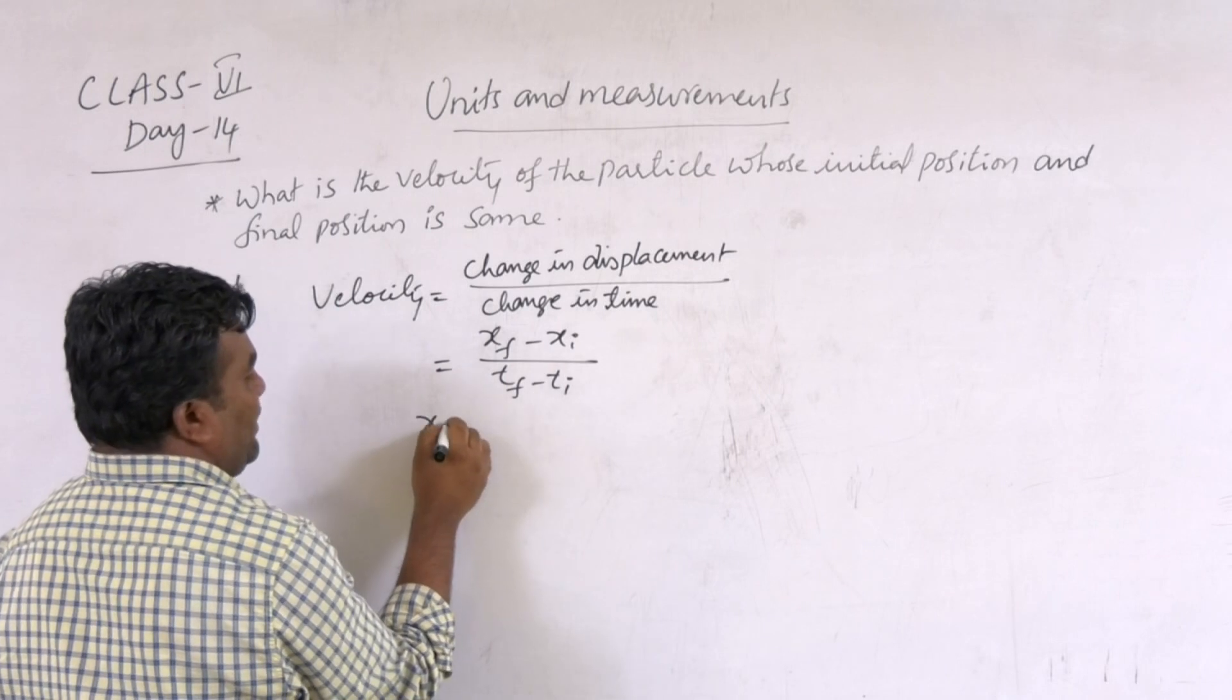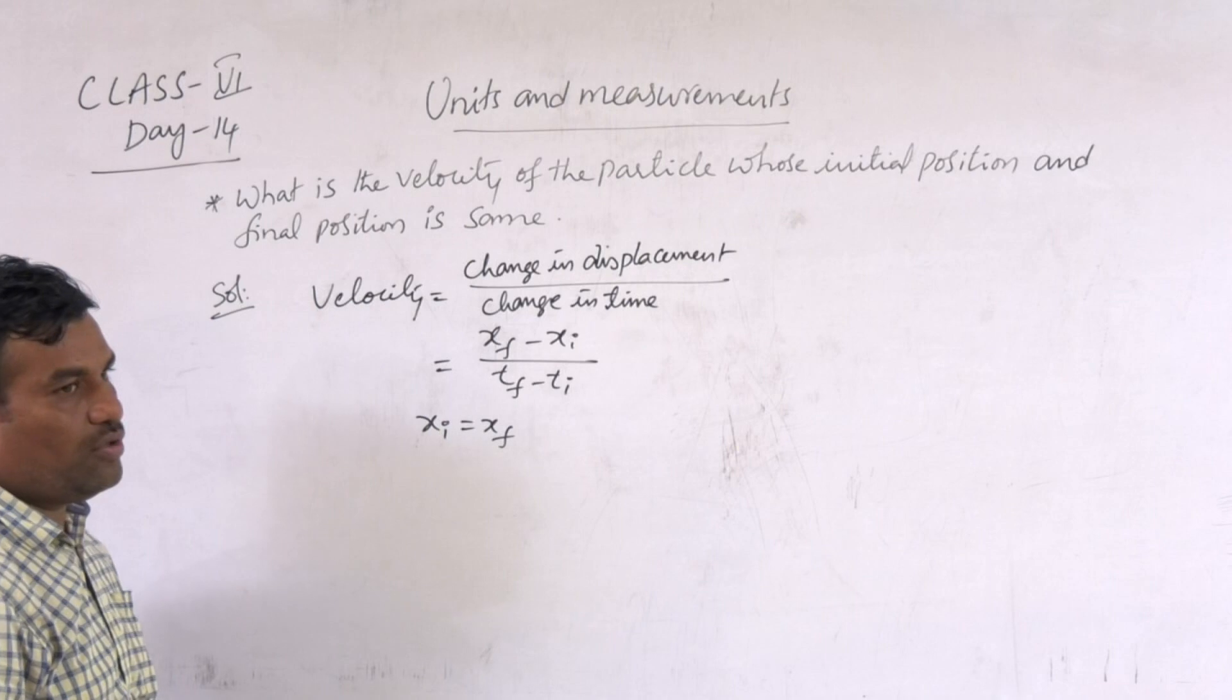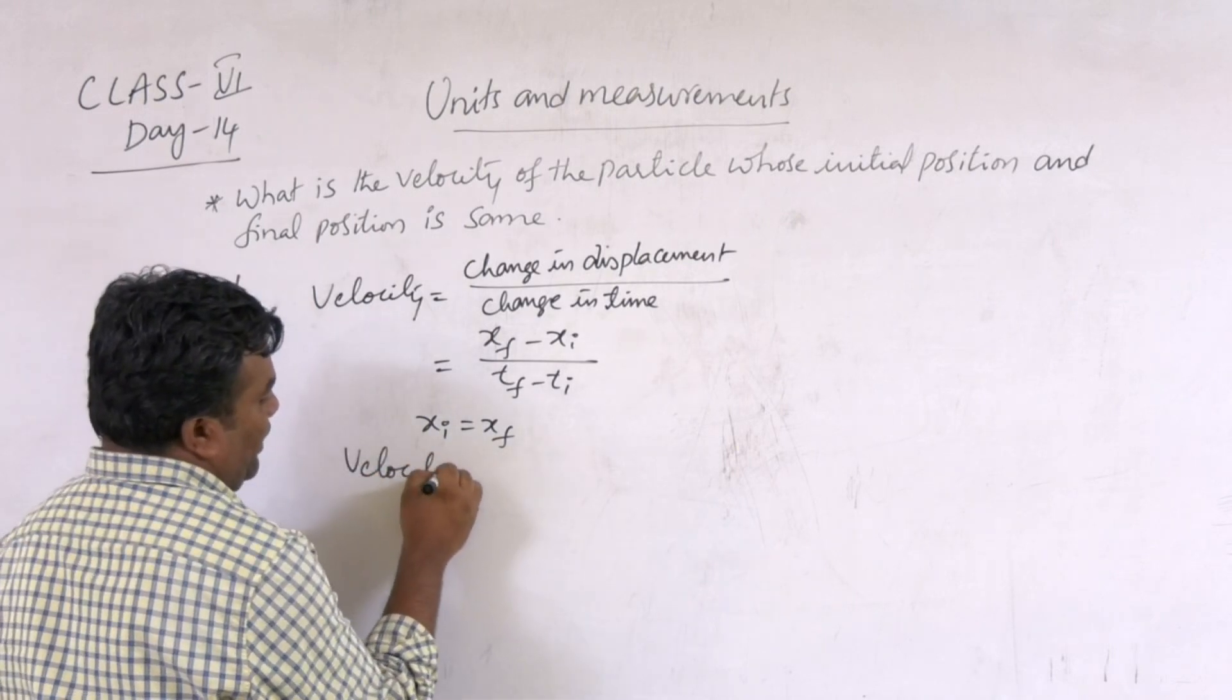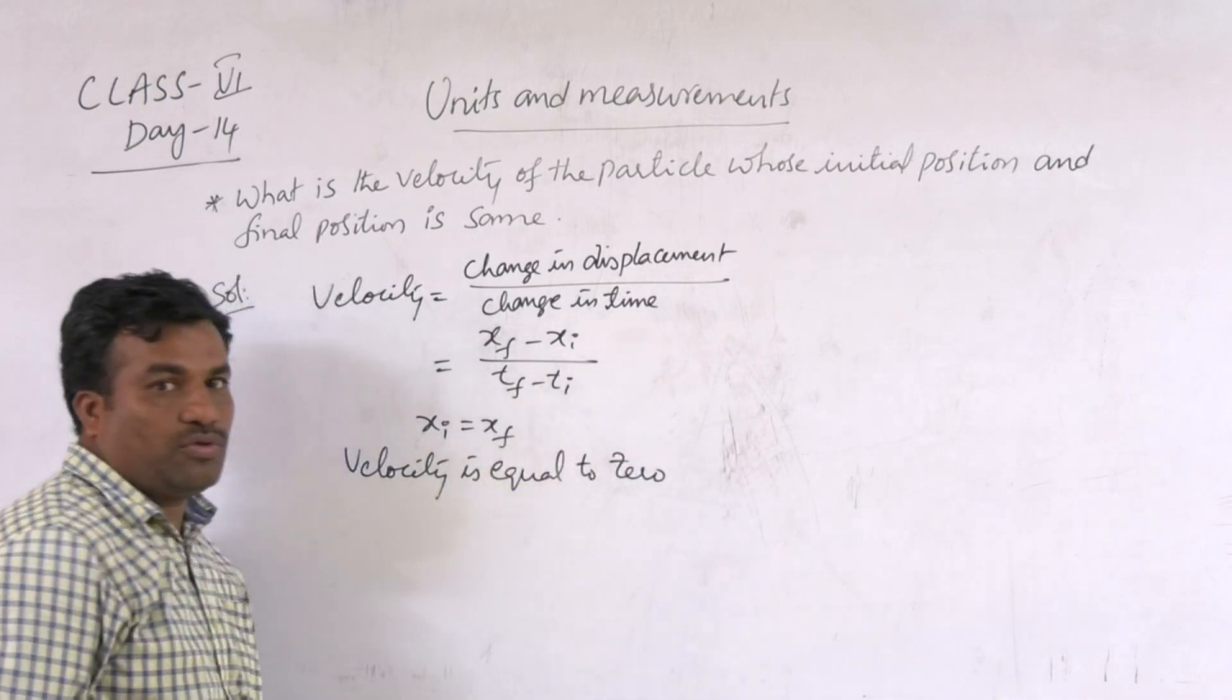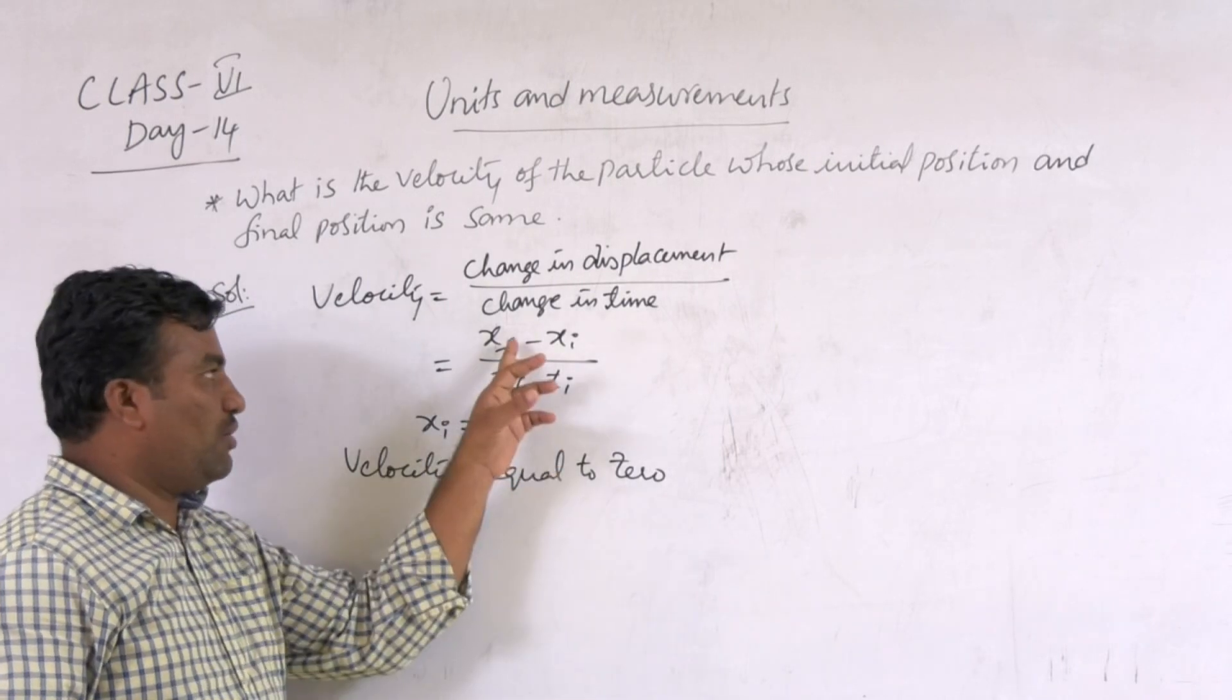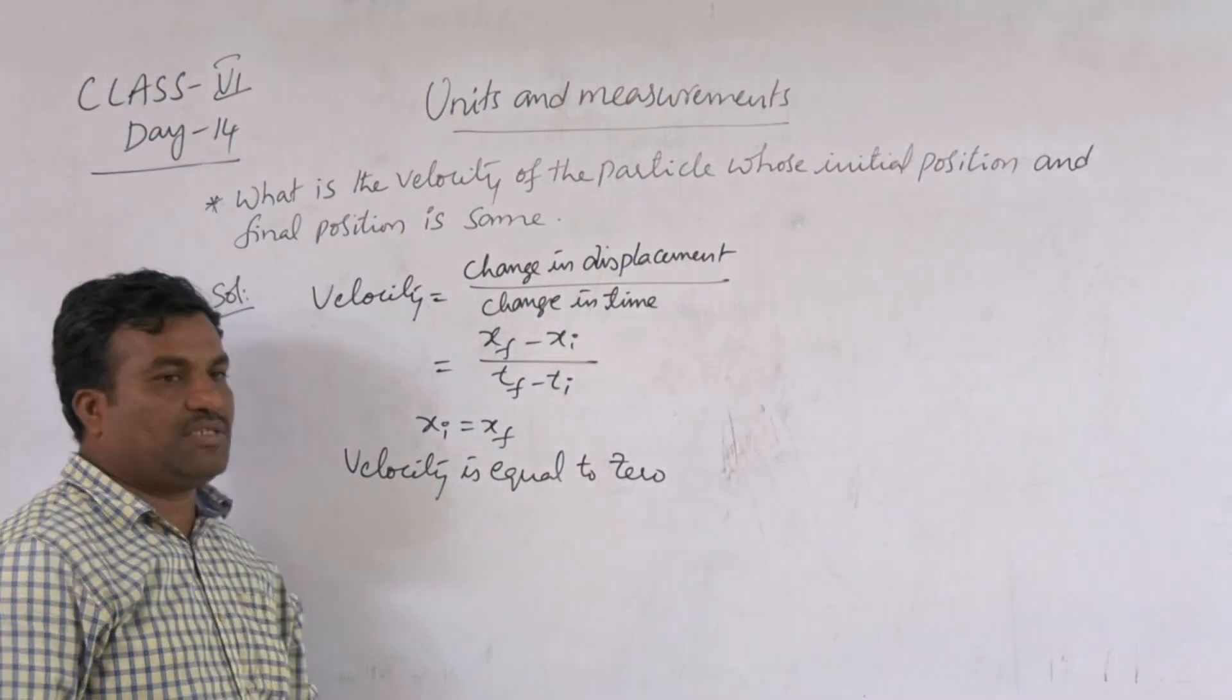But x initial equals x final, meaning initial position equals final position. So that's why velocity is equal to zero. Why? Because x initial equals x final, these two are equal, so it's zero. Total velocity is equal to zero. Thank you.